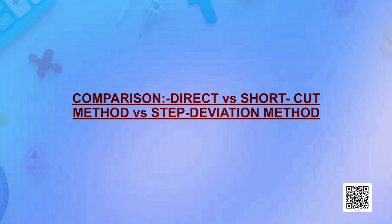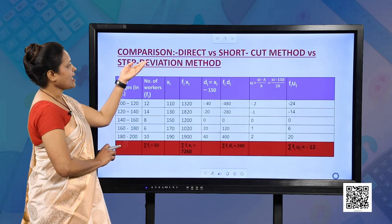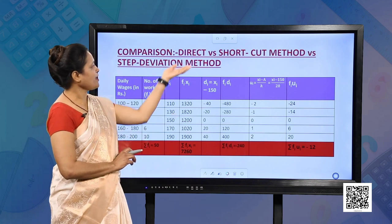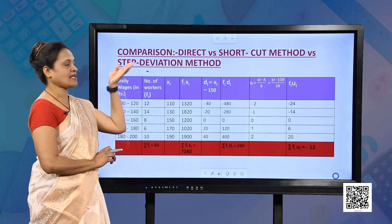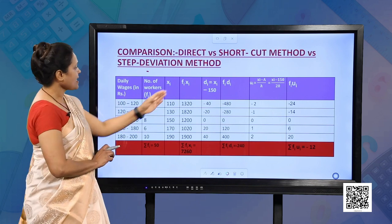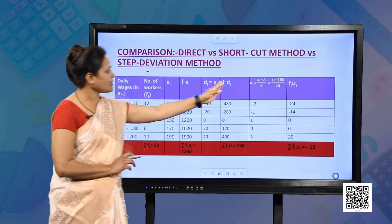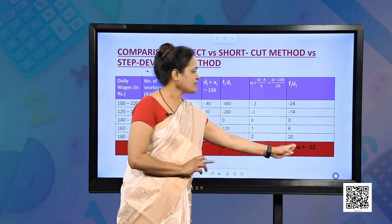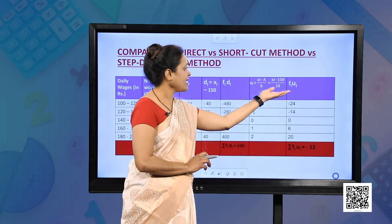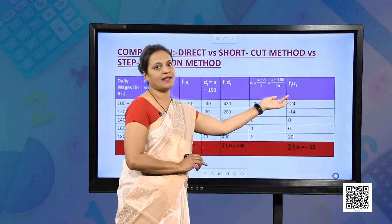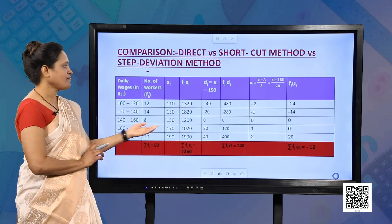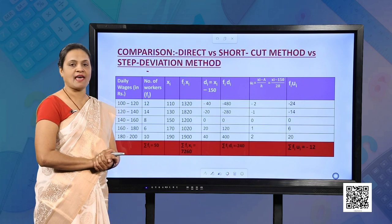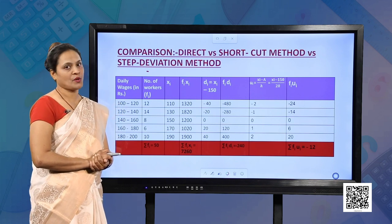Now let us compare these three methods. Looking at the calculations of the direct method, the shortcut assumed mean method, and the step deviation method together, we can see that the calculations are most simplified in the step deviation method. So you can judge, looking at the question, which method is most appropriate.